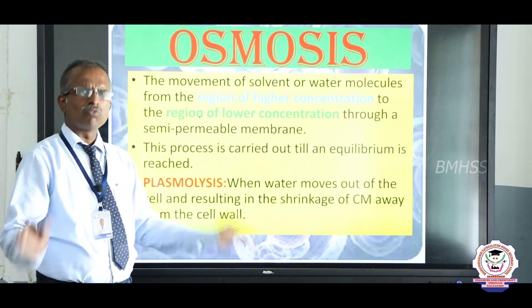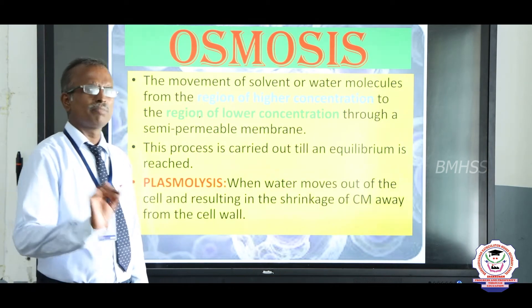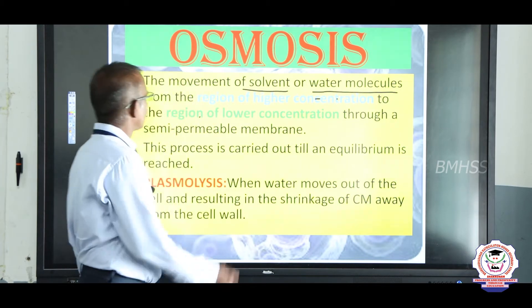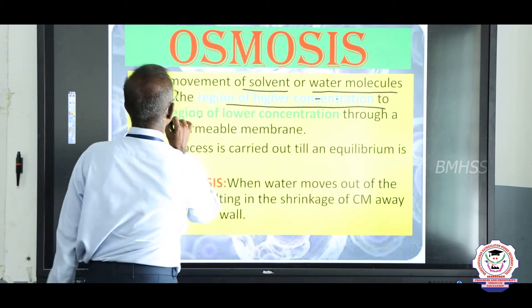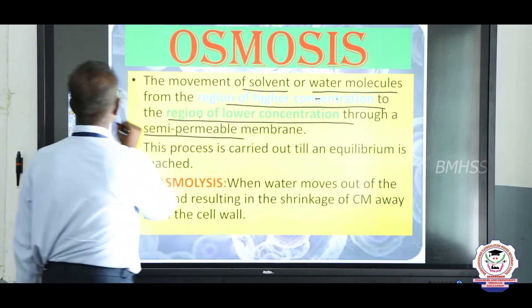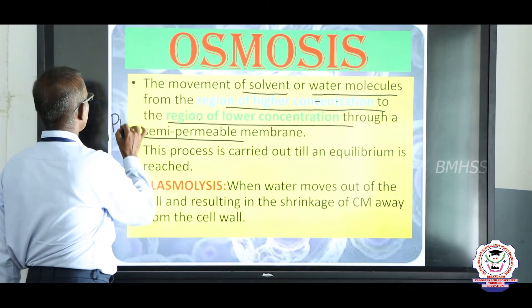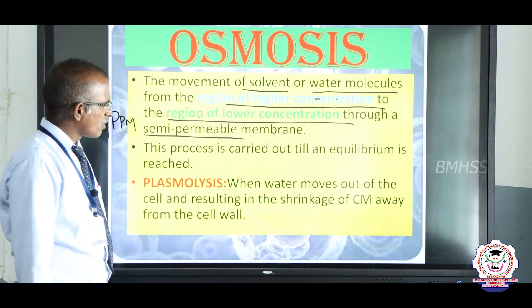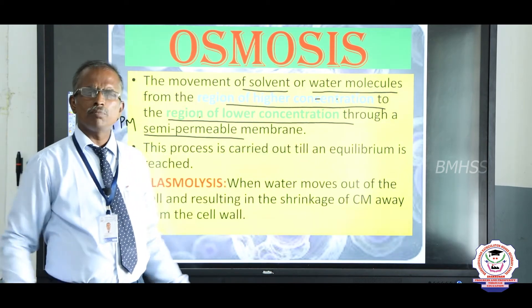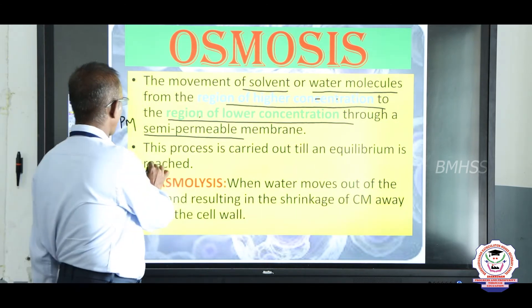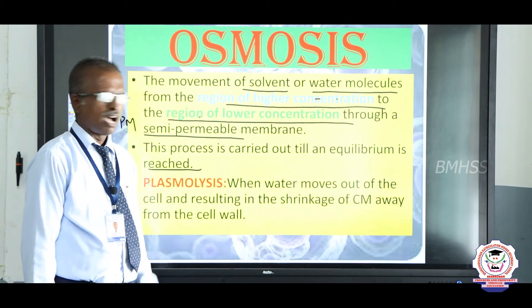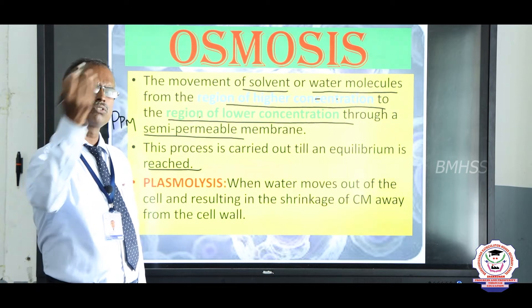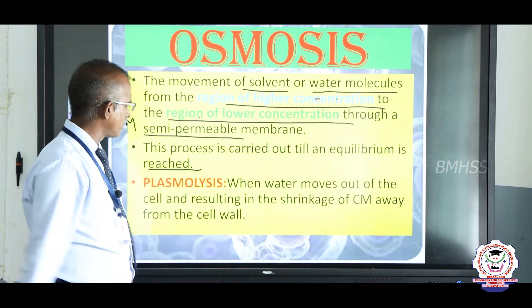What is osmosis? The movement of solvent — that is, water molecules — from a region of higher concentration to a region of lower concentration through a semi-permeable membrane, also called a partial permeable membrane. This process continues until equilibrium is reached — that balance is when osmosis stops. So osmosis is the movement of water molecules from higher to lower concentration through a semi-permeable membrane.